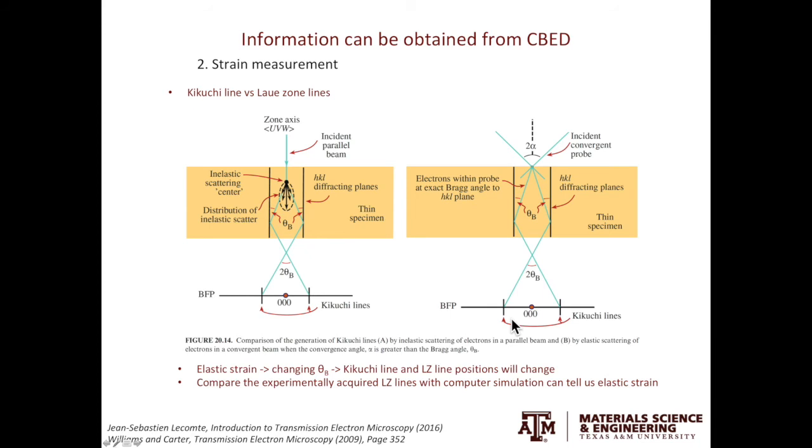Now we can look at how to relate the Kikuchi lines to the strain of the material. If the material is elastically strained, then the lattice spacing will change. If the lattice spacing changes, then the width of the Kikuchi band or the distance between the two Kikuchi lines will change. The same idea applies to the Laue zone lines. If we compare the distance of the Kikuchi lines or the Laue zone lines of the strained area to the unstrained area, we can quantify the strain.